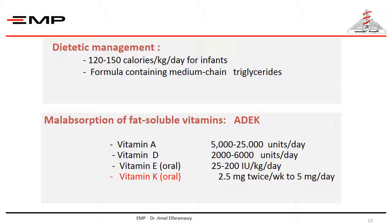Dietetic management is very important. You have to increase the daily caloric intake for infants and use formula containing medium-chain triglycerides to compensate for the chronic diarrhea due to fat malabsorption. Also, supplementation of vitamins A, D, E, and K to compensate for the malabsorption of fat-soluble vitamins is very important, especially vitamin K, as its deficiency is associated with high risk of bleeding.